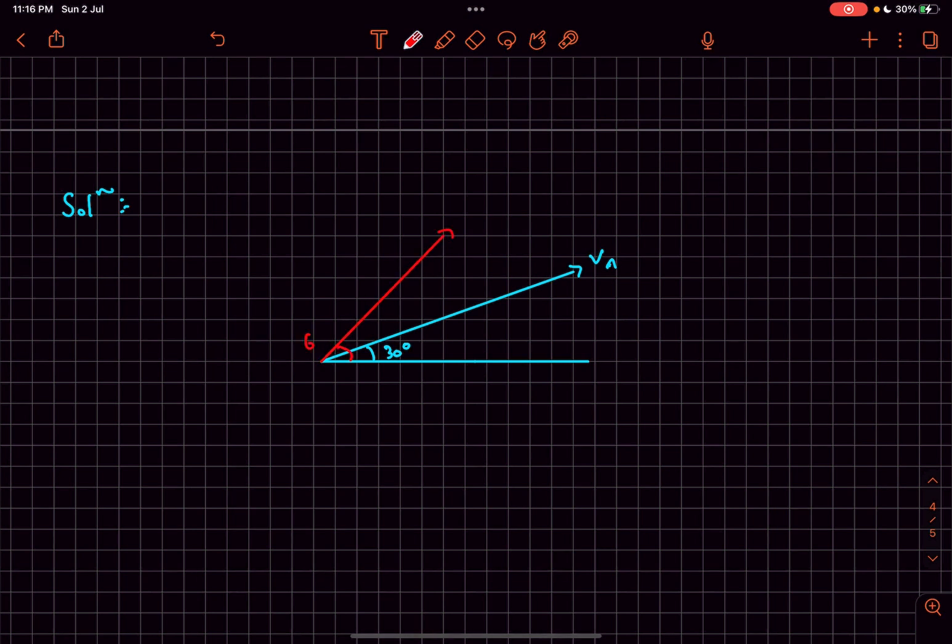It's given that the velocity of B relative to A was perpendicular to the line of motion of A. So the velocity of B relative to A is this vector. It's going to be vB minus vA, which means it's going to be this vector.